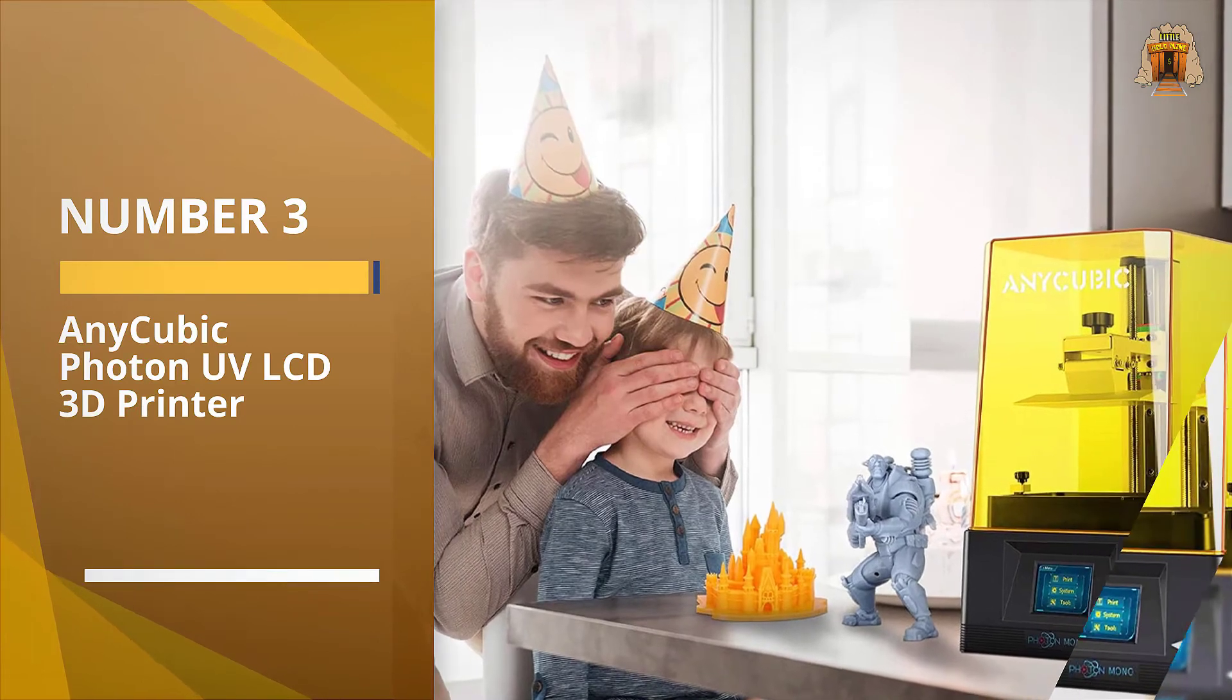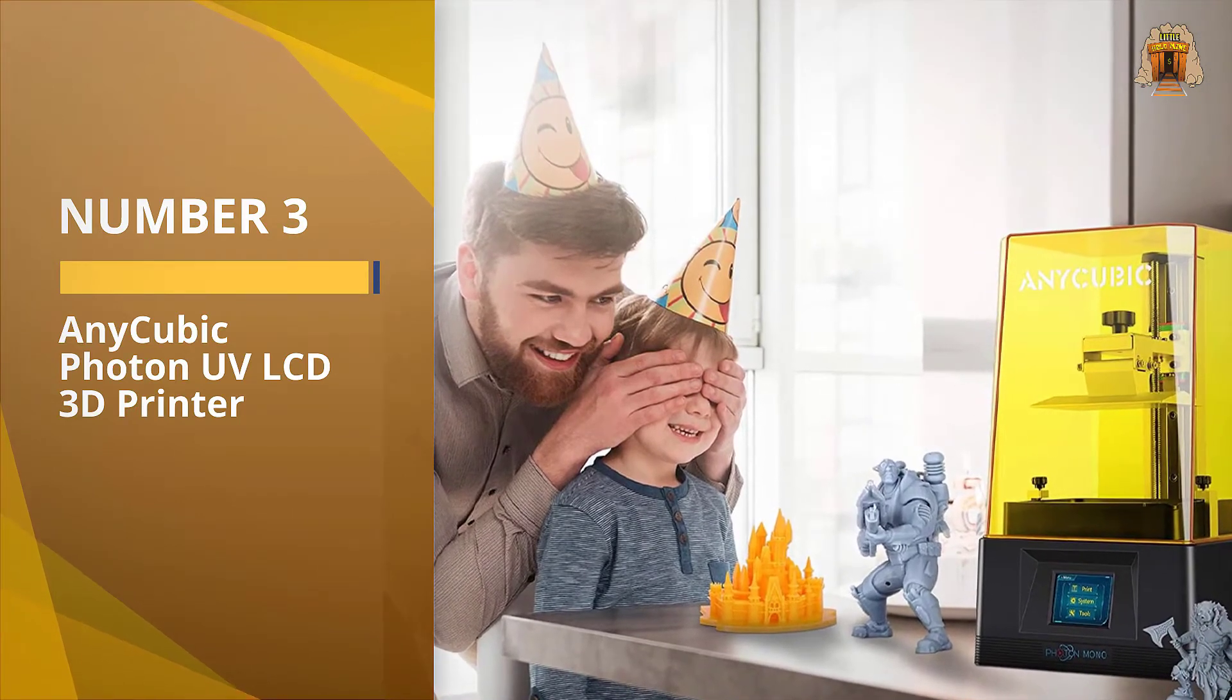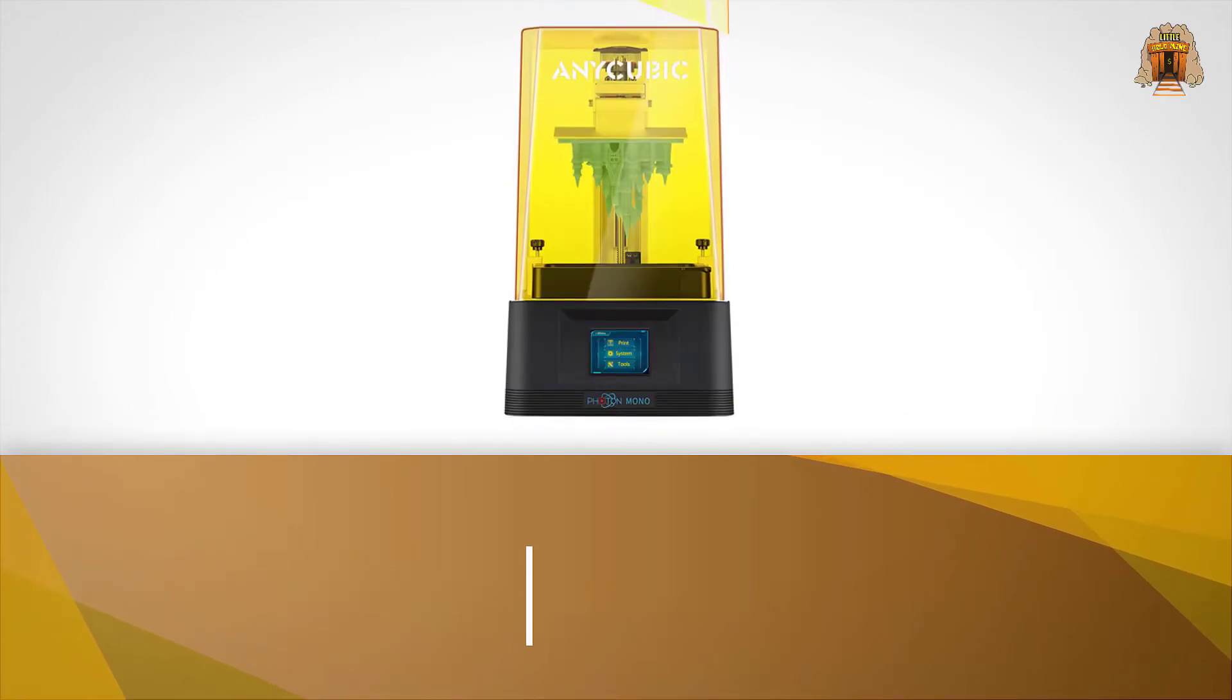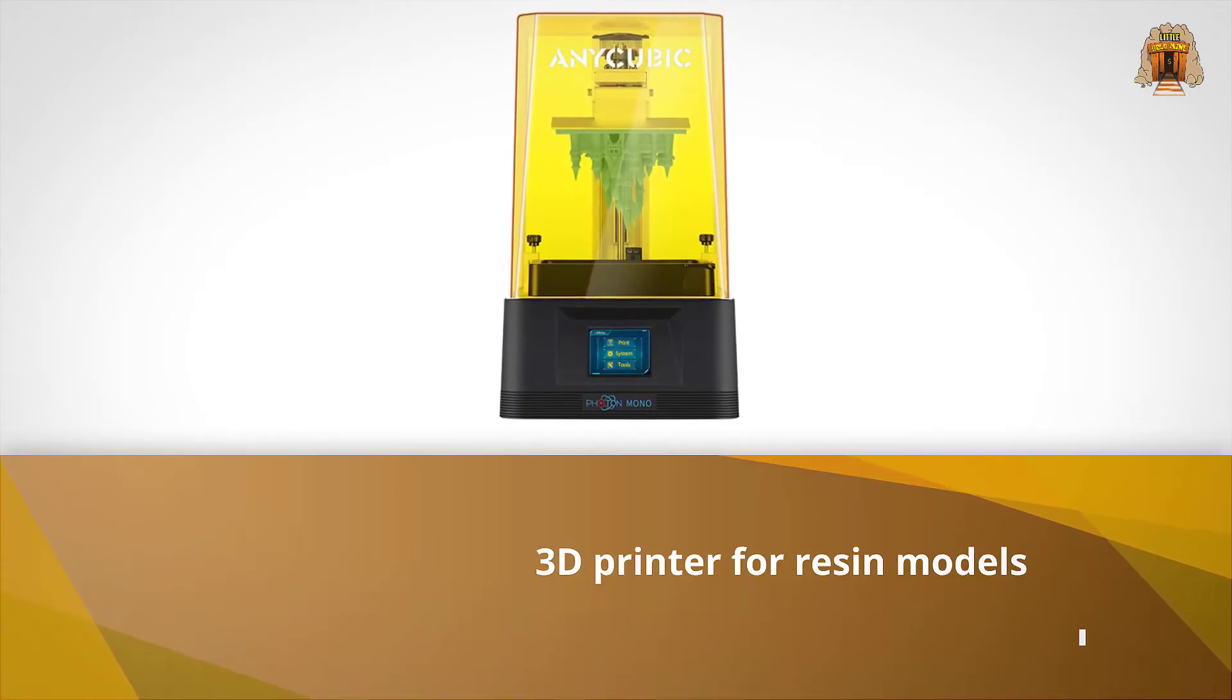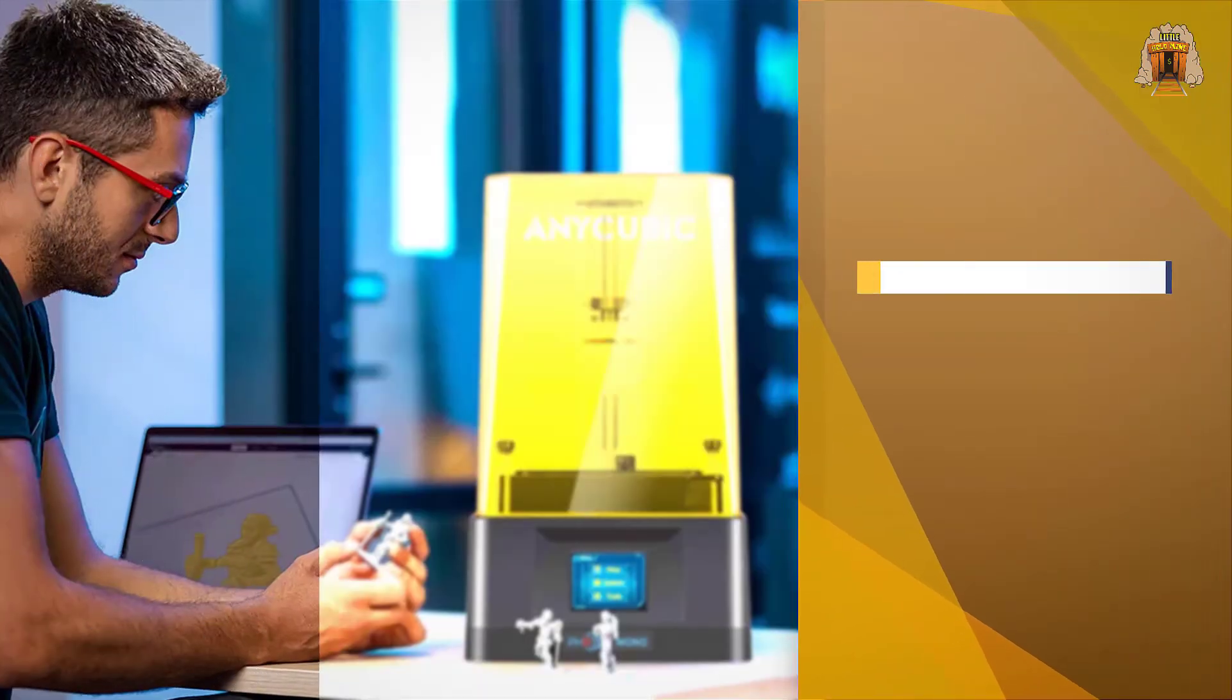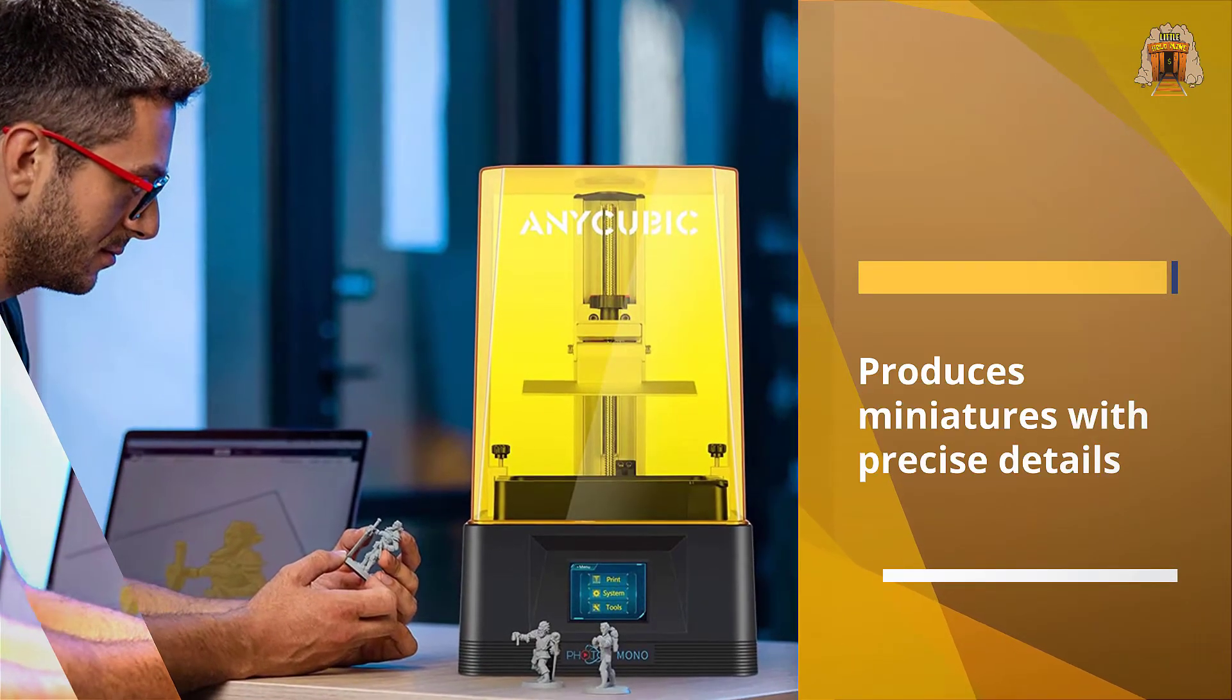Number three: Anicubic Photon UV LCD 3D Printer, the best 3D printer under $500 for printing stunning miniatures in high quality down to the last precise detail is the Anicubic Photon UV LCD 3D Printer.